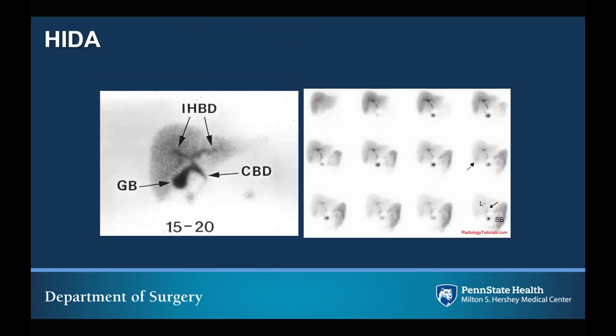In cases of ambiguity in establishing the diagnosis, you can obtain a HIDA scan — a nuclear medicine scan where a radioactive isotope is injected into the patient, passed through the liver into the biliary system, and viewed on sequential images. A normal HIDA scan shows the gallbladder fill with the radiotracer. An abnormal series of images that does not show the gallbladder fill at any point is indicative of an obstruction of the cystic duct, which would be considered diagnostic of acute cholecystitis.